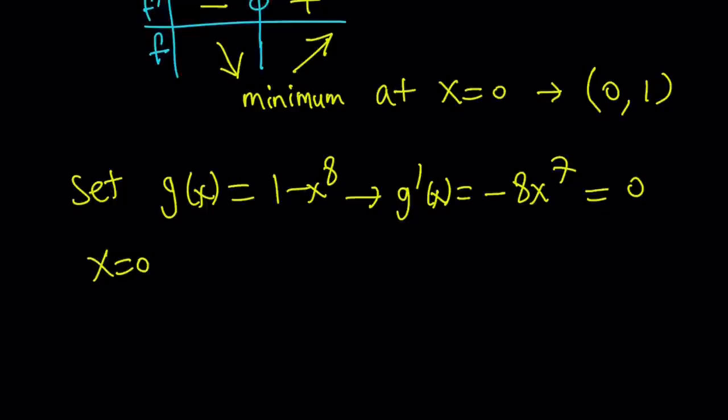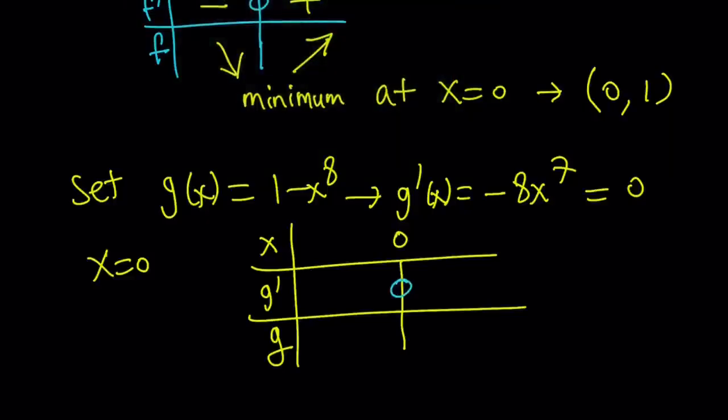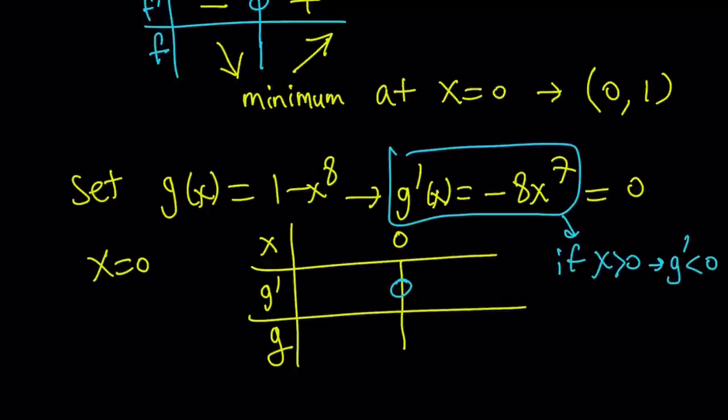So let's go ahead and make a table with this one, too. I'm going to put the x here, g prime, and g here. And our critical value is, again, 0. So what are we going to do? We're going to find out whether g prime is positive or negative to the left of 0 and to the right of 0. So if you look at this derivative real quick, if x is positive, then the derivative, g prime, is going to be negative, right? Because we have a negative sign. If x is positive, x to the 7th is going to be positive. Negative 8 multiplied by that is going to be negative. So we kind of have the opposite situation here. We're going to put in a minus sign and a plus sign, indicating that our g is going to increase here and decrease here, making a max at x equals 0.